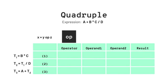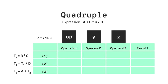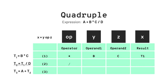The operator field corresponds to op, operand1 corresponds to y, and operand2 to z, whereas the result corresponds to x. The number of rows equals the number of references used, i.e. 3. For t1 = b * c: operator is star, operand1 is b, operand2 is c, result is t1. For t2 = t1 / d: operator is slash, operand1 is t1, operand2 is d, result is t2. For t3 = a + t2: operator is plus, operand1 is a, operand2 is t2, result is t3. This is the final quadruple table.